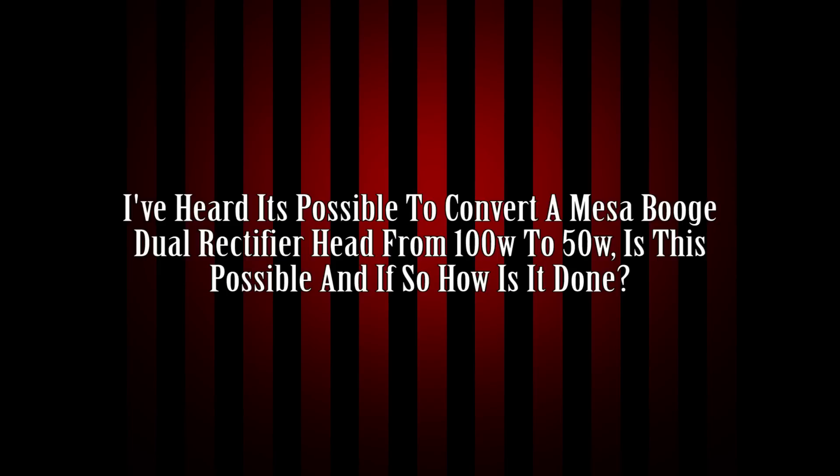I thought it's possible to convert a Mesa Boogie Dual Rectifier head from 100 watts to 50 watts — is this possible and if so how is it done? Yes, absolutely. You can also do that trick with just about any 100-watt tube head. What you do is pull either the two outside or the two inside power tubes to step it down to 50 watts. You never want to pull the two left or two right — you have to keep the circuit symmetrical — so that's why you pull the two inside or two outside.